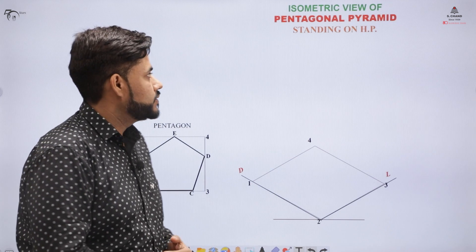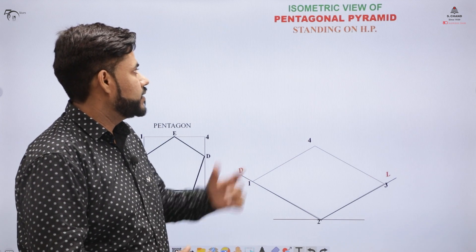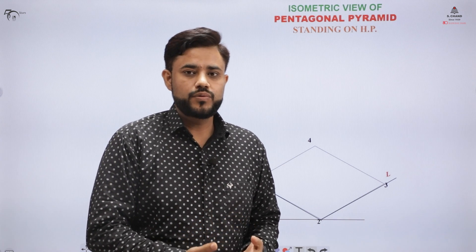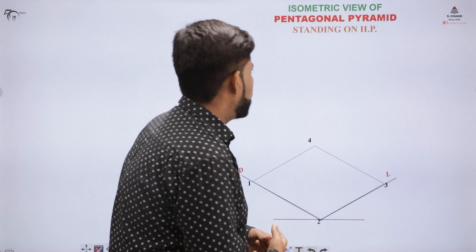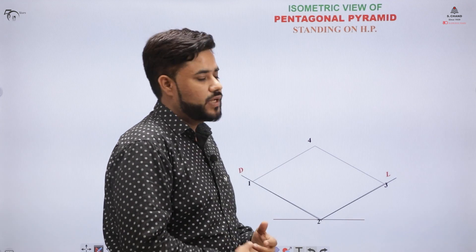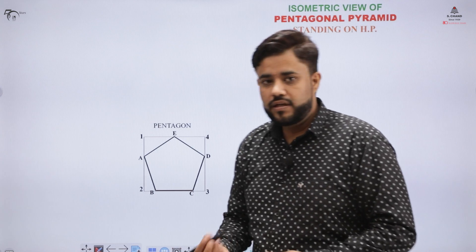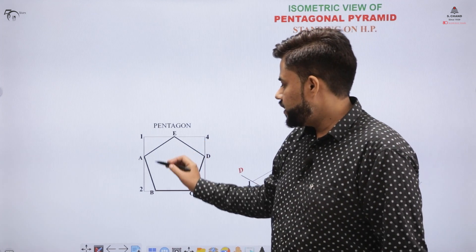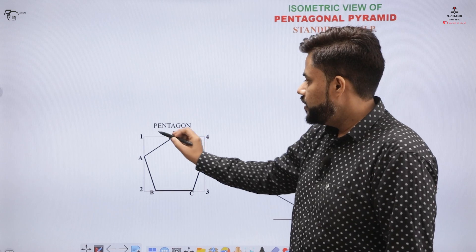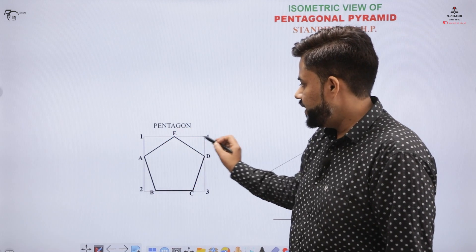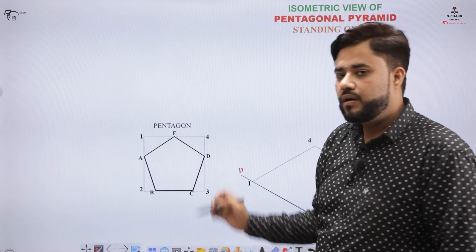As the topic suggests, we have to prepare the isometric view of a pyramid — namely a pentagonal pyramid — and we have the situation in which the pyramid is standing on the horizontal plane. So we have to create a pentagonal pyramid and place it in a box.